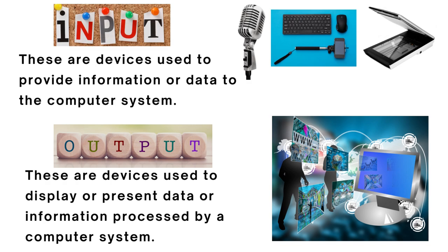The scanner captures images and text from paper documents and converts them into digital form. The microphone — like the one I'm using right now — captures sound and converts it into digital form. The webcam captures video and images and sends them to a computer system. Now let's look at output devices — these are devices used to display or present data processed by a computer system.